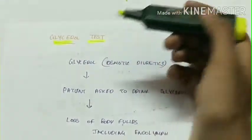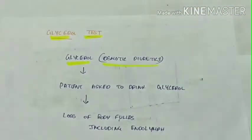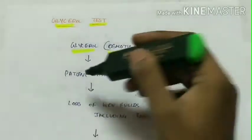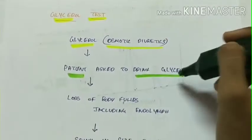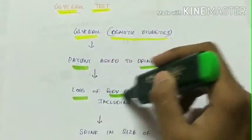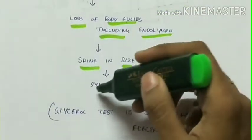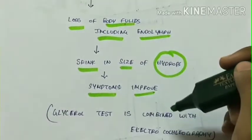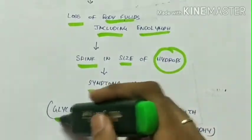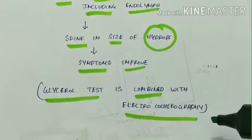Next is the glycerol test. Glycerol is an osmotic diuretic. In glycerol test the patient is asked to drink glycerol. Being an osmotic diuretic there is loss of body fluids including the endolymph. So the hydrops size shrinks and the symptoms improve. This is the glycerol test. Always glycerol test is combined with electrocochleography.